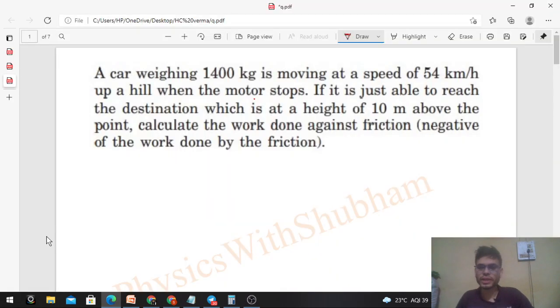Okay, hi everyone. Today let's discuss this interesting problem. A car weighing 1400 kilograms is moving at a speed of 54 kilometers per hour up a hill when the motor stops. If it is just able to reach the destination which is at a height of 10 meters above the point, calculate the work done against friction.